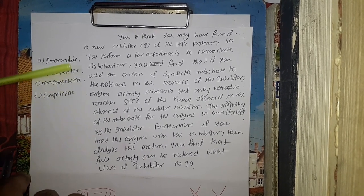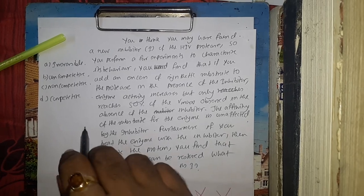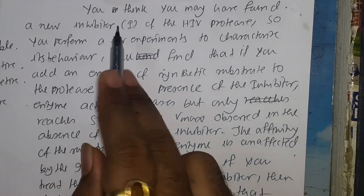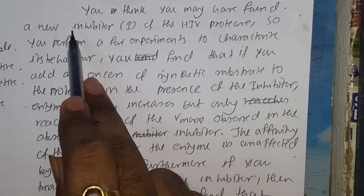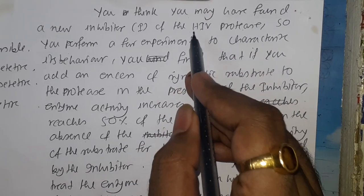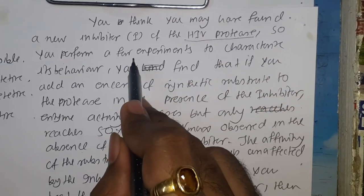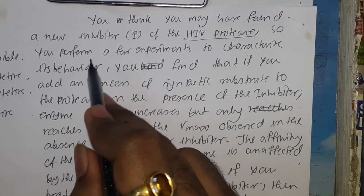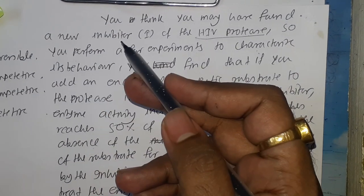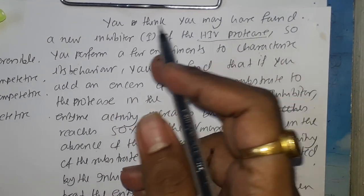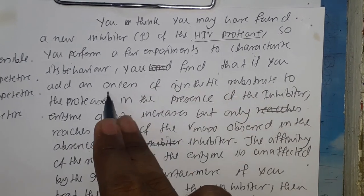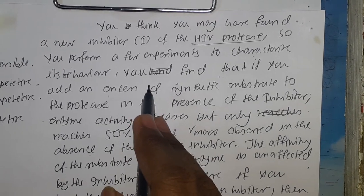Today we are going to talk about a very interesting question. Let me zoom in so that you can find it easily. A researcher thinks they may have found a new inhibitor of the HIV protease. So they perform a few experiments to characterize its behavior — whether it is an irreversible inhibitor or a reversible inhibitor, and if reversible, which kind: competitive, uncompetitive, or non-competitive.